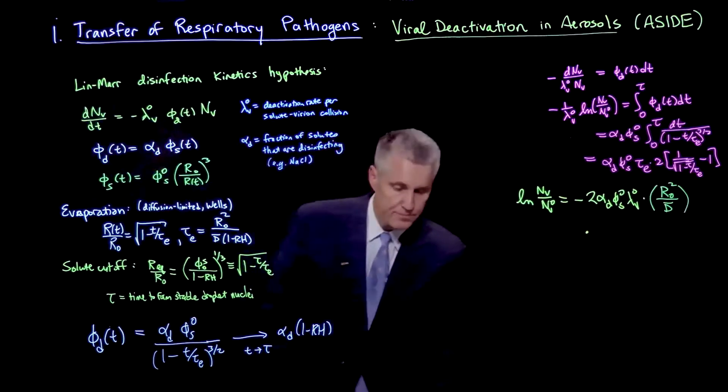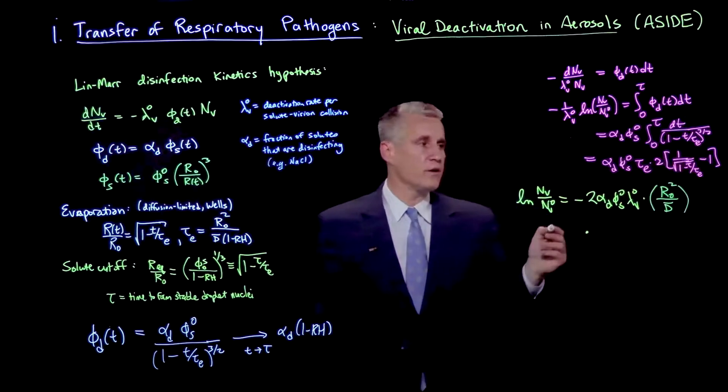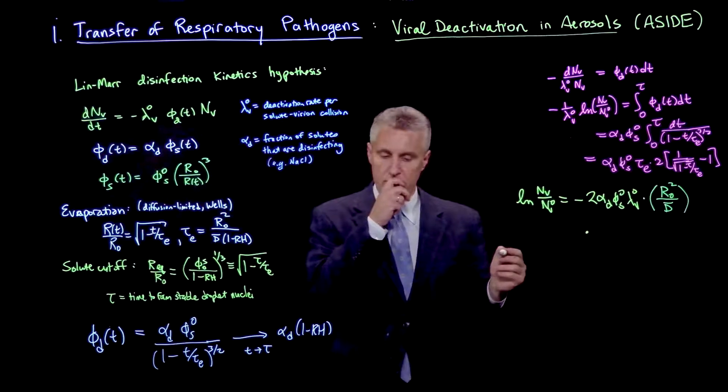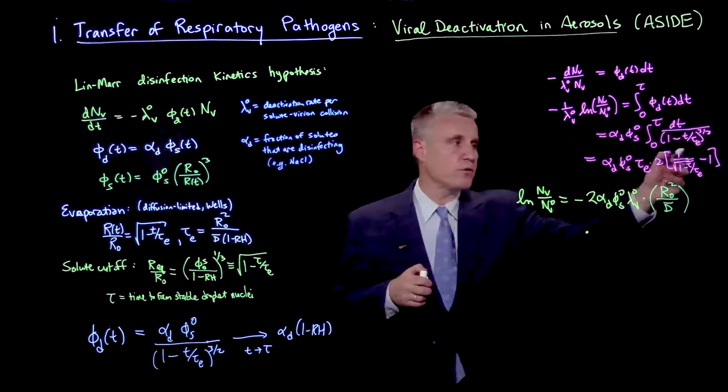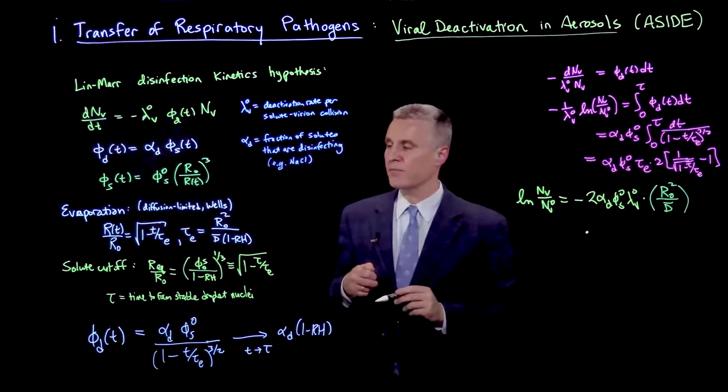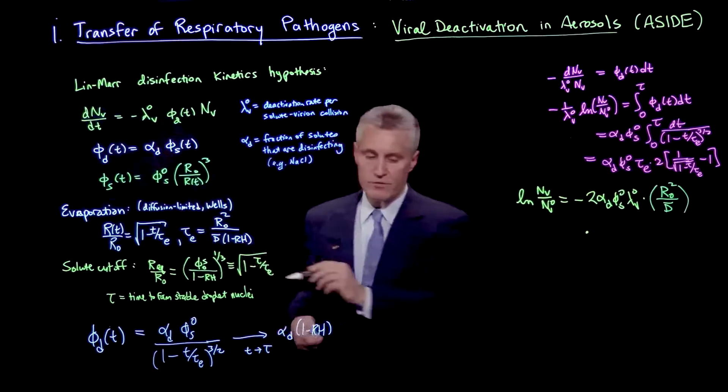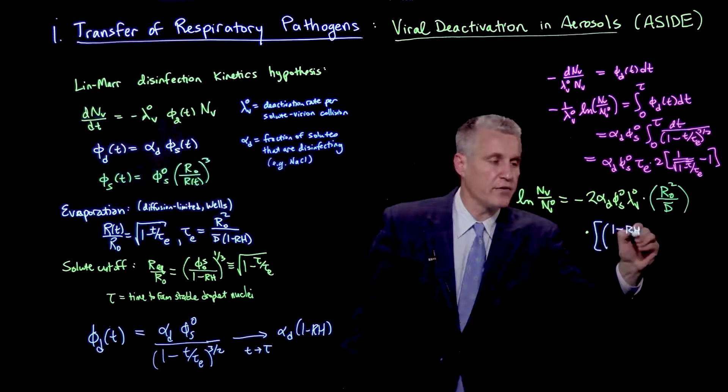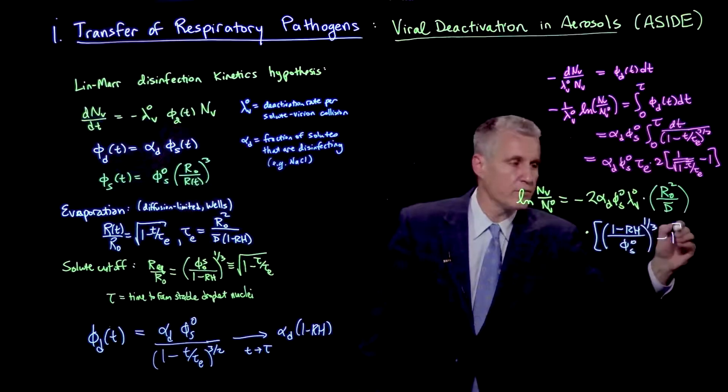What we're really interested in is the relative humidity effect. We have this factor, and 1 over square root of tau, this one is from right here, that's r over r of tau. And r of tau is, by definition, r equilibrium. So it's this factor here. We get 1 minus rh over phi s 0 to the 1 third minus 1. And then we also have this factor of 1 minus rh that comes from the tau e.